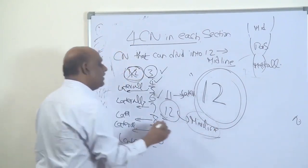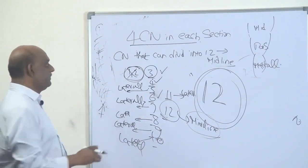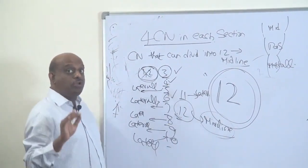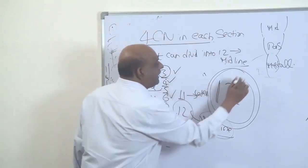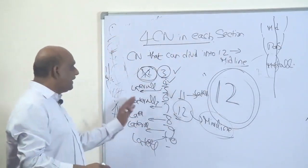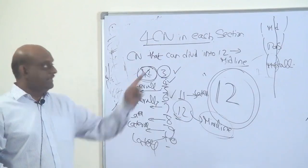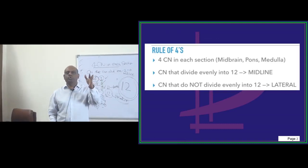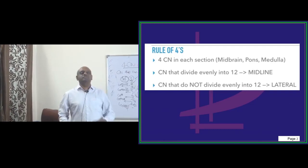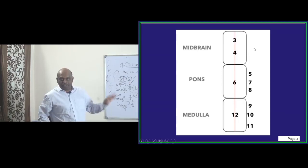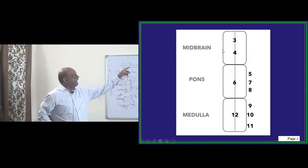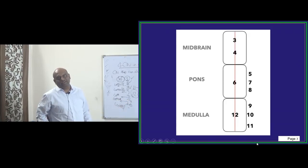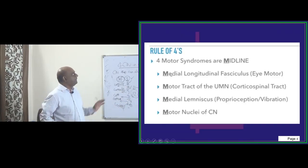So, the cranial nerve nuclei located medially in the midline are: cranial nerve 3, cranial nerve 4, cranial nerve 6, and cranial nerve 12. These four cranial nerve nuclei are located medially — that is in the midline — is what you have to remember. The remaining cranial nerves are all located laterally. If you remember this Rule of Four, you are an expert in brainstem stroke syndromes. Let us summarize this pictorially: 3 and 4 are medial, 6 is medial, 12 is medial — whereas 5, 7, 8, 9, 10, 11 are all laterally located.